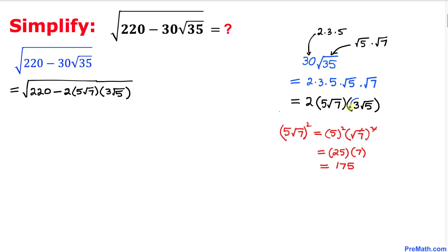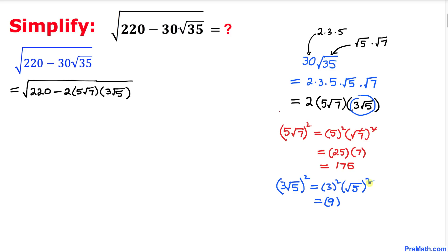Likewise, let's focus on 3 times square root of 5. Let's go ahead and square this one as well. We get 3 squared times square root of 5, all squared. 3 squared is 9, and the square and square root undo each other, times 5. So that gives us 45. This whole thing simplifies to 45.